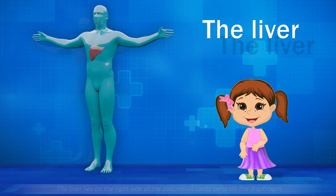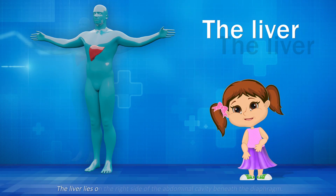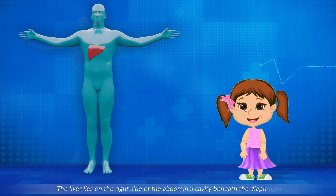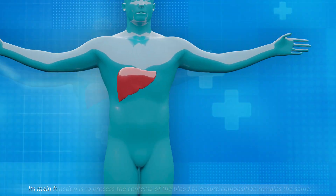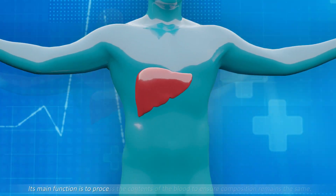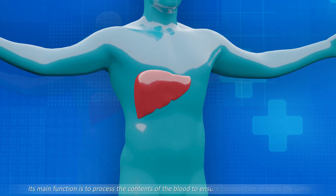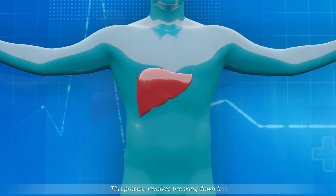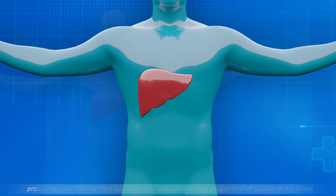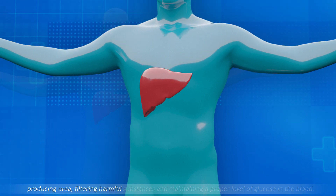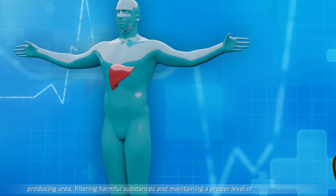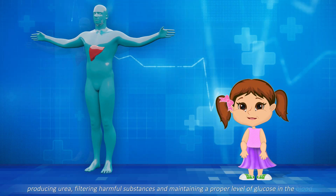The liver. The liver lies on the right side of the abdominal cavity beneath the diaphragm. Its main function is to process the contents of the blood to ensure its composition remains the same. This process involves breaking down fats, producing urea, filtering harmful substances, and maintaining a proper level of glucose in the blood.